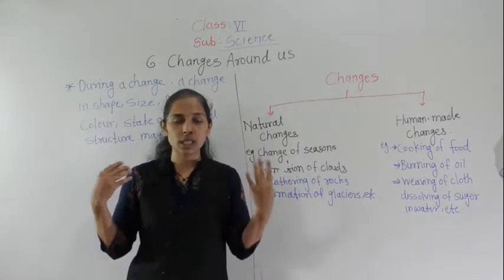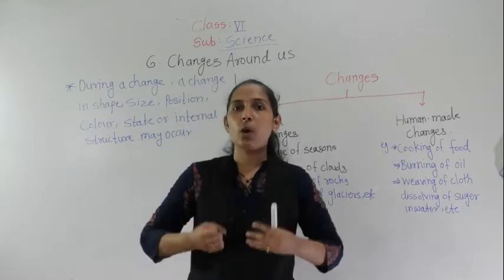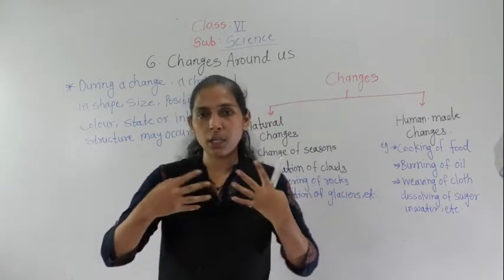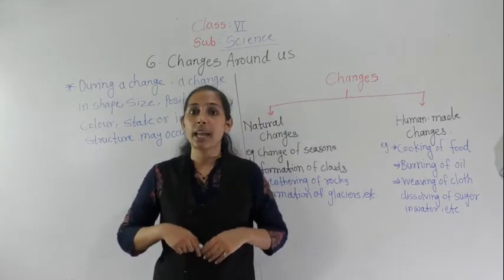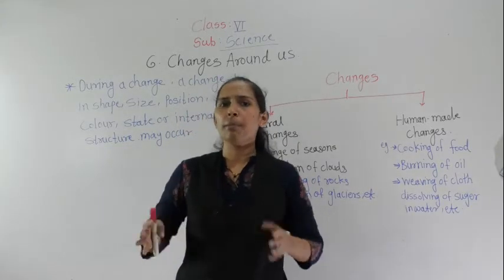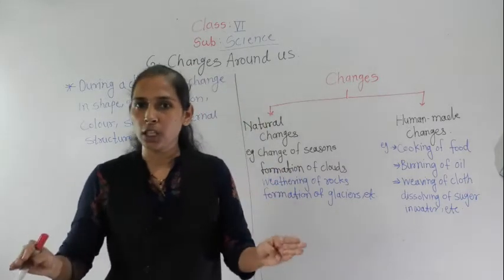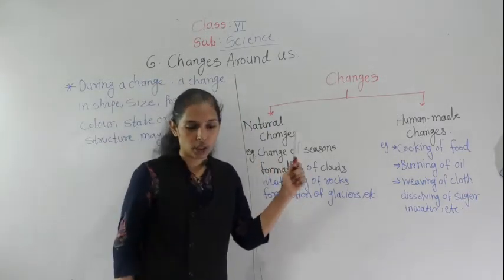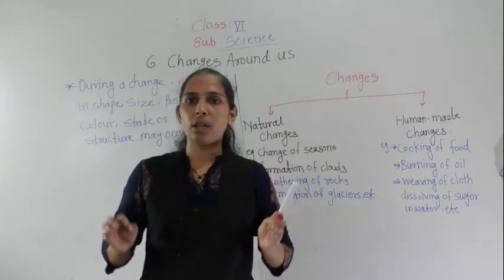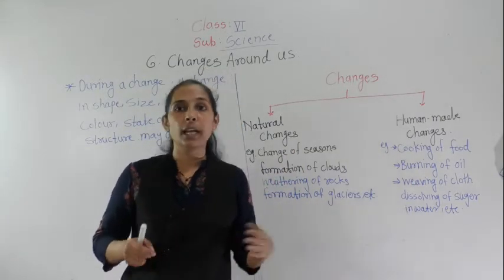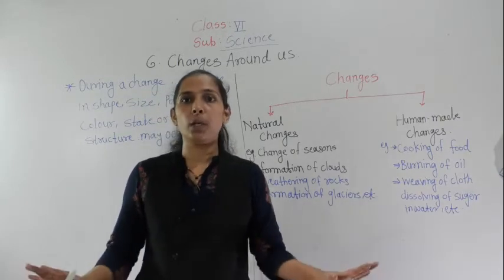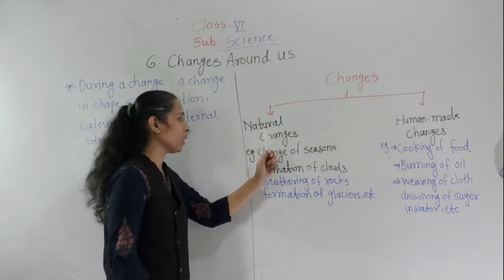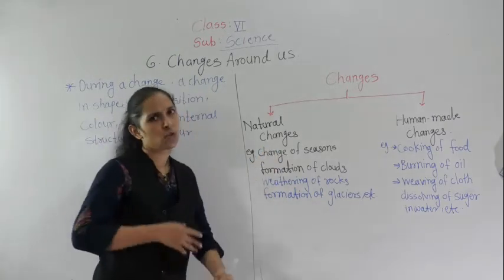There are certain changes which occur in our surroundings that are not in the control of human beings — they are beyond the control of human beings. They occur naturally; human beings cannot control these changes. Such a change is called a natural change.